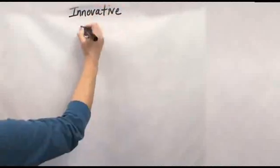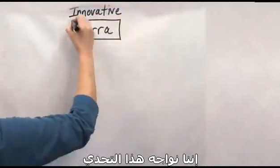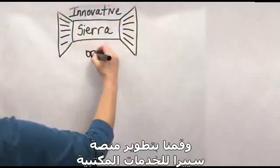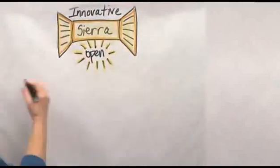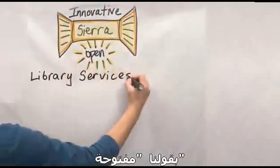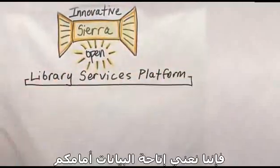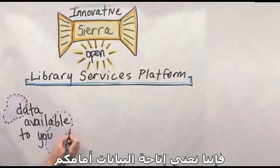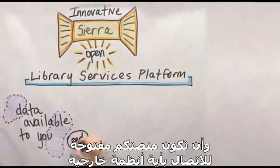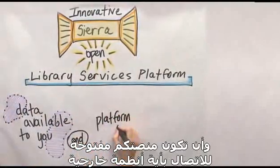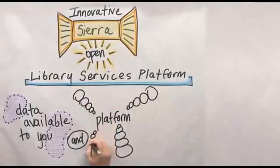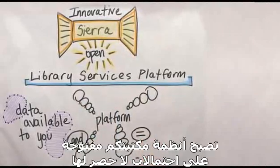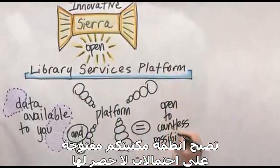Here at Innovative, we're meeting that challenge and have built our library services platform, Sierra, to be open. When we say open, we mean that your data is available to you and your platform is open to connect with outside systems. By extension, your library systems are open to countless possibilities.